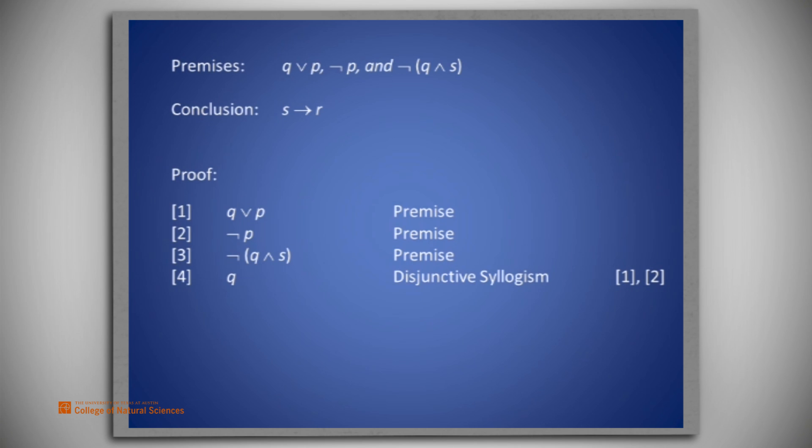Since at least one of Q and P must be true, yet P is false. Now let's introduce the conditional premise S on line 5. Doing a conjunction of lines 4 and 5, we have Q and S.